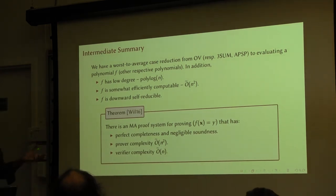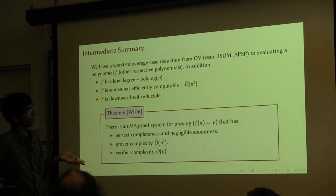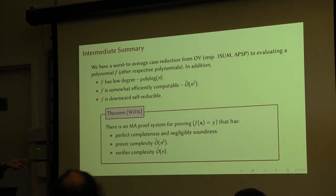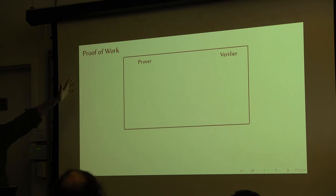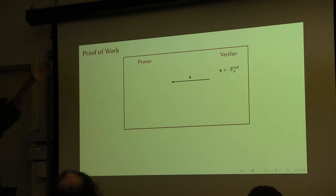The polynomial f has all these properties, which is what makes this reduction interesting. Here is an example of an application: I'm going to show you a protocol. You have a prover and a verifier. The verifier picks a random input from the space we discussed earlier and sends it over to the prover. The prover is supposed to evaluate f on this input to come up with a value z, and also come up with a proof that f(x) = z. Then the verifier will verify this and will accept if the proof verifies.